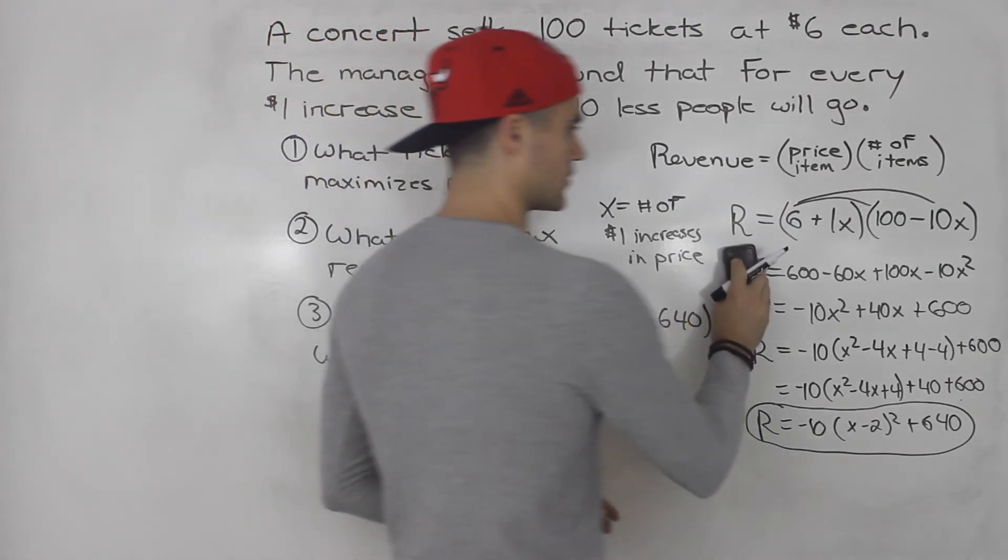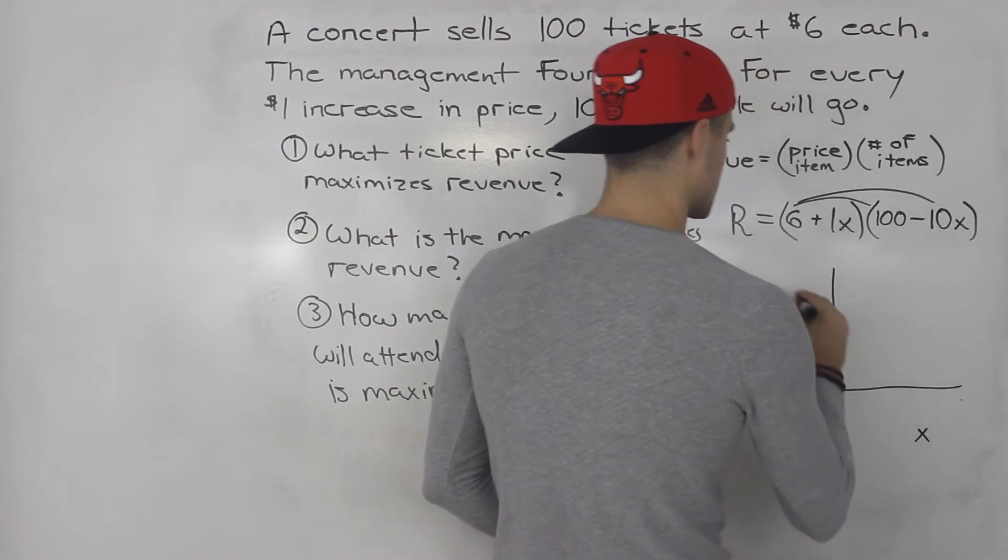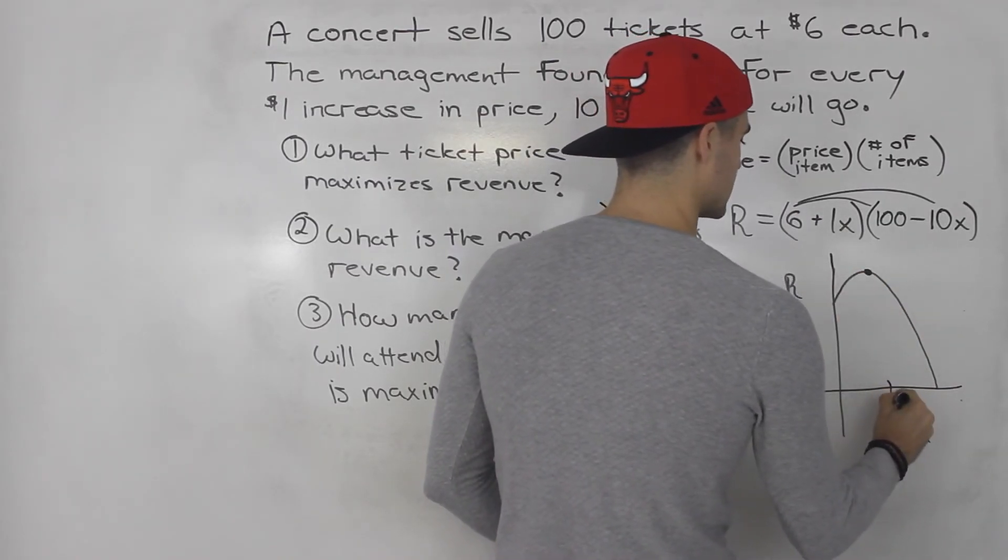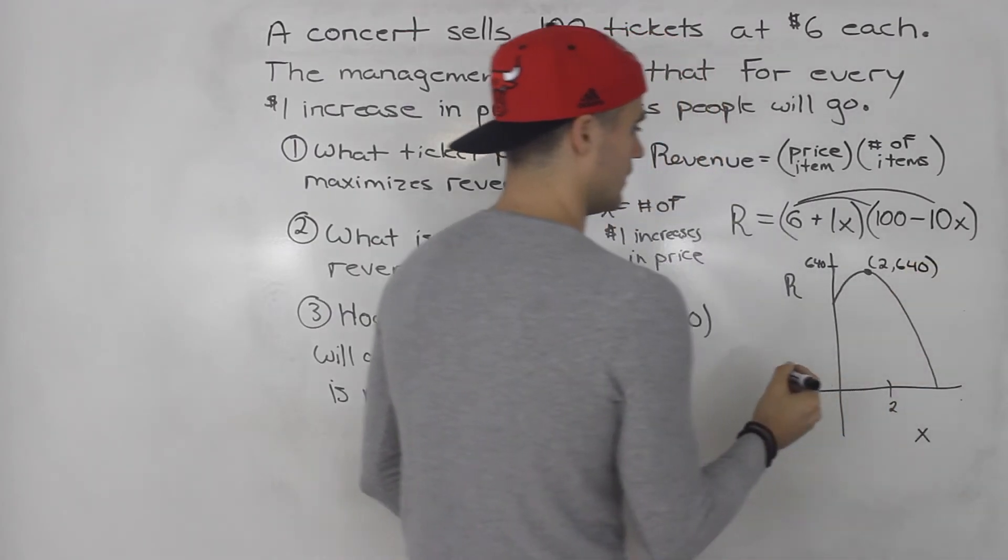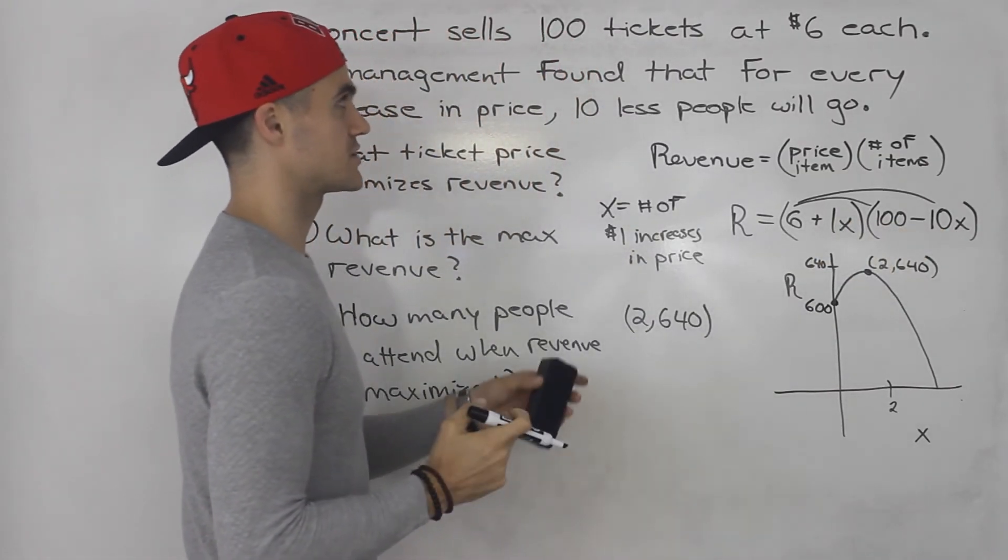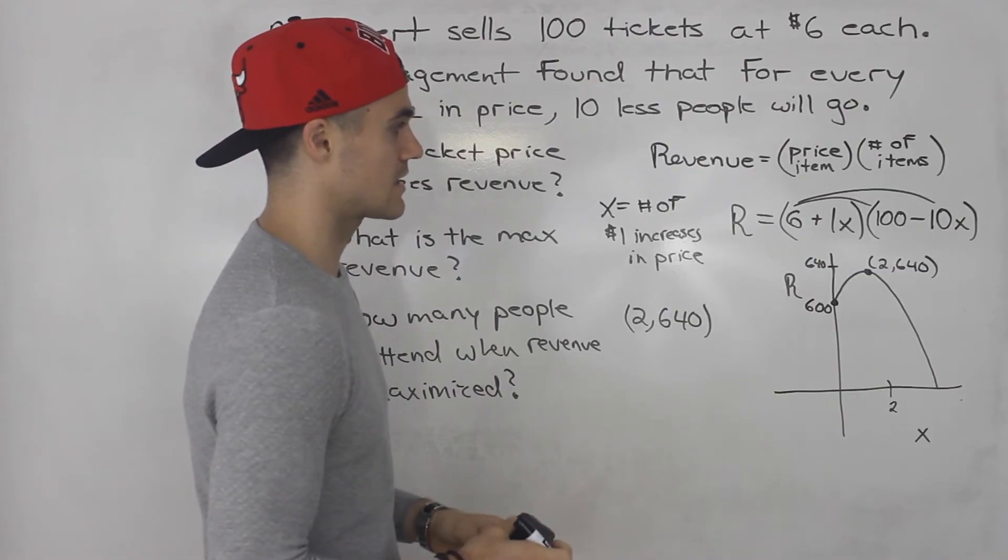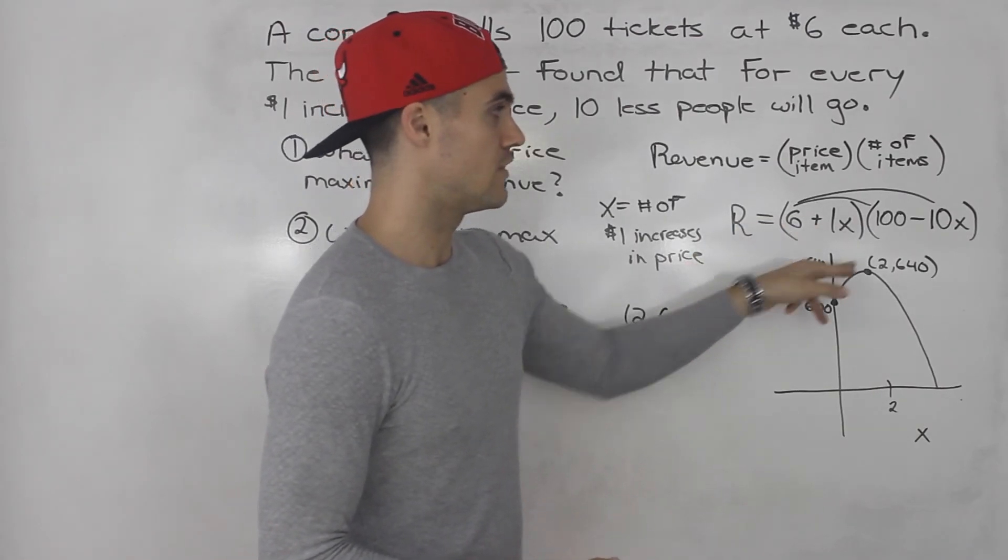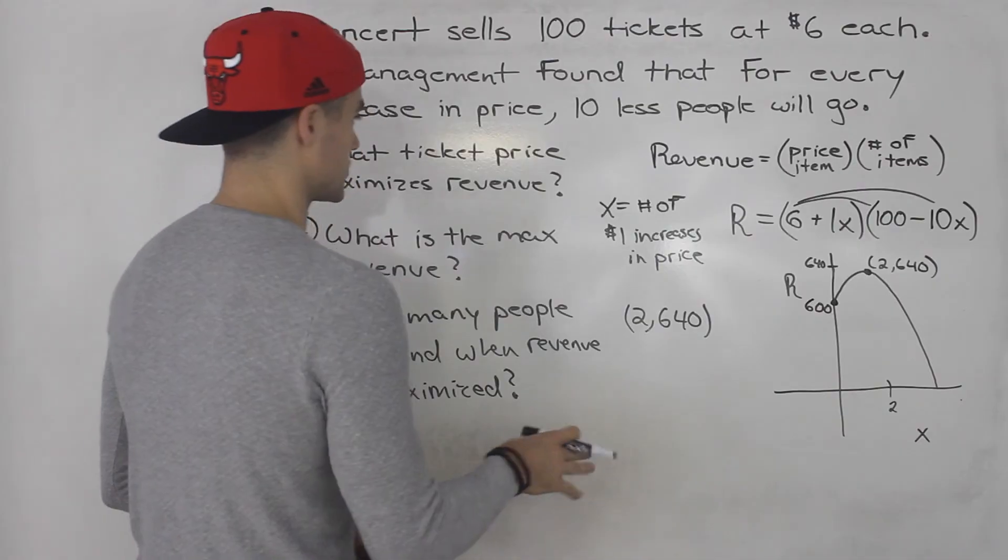Just to redraw the graph, we got x which is the number of price increases, and the revenue. Maximum revenue is happening at 2 and 640. What's the revenue here at x equals 0? 600, right? That's just the initial revenue that the concert had, $6 times 100 tickets. So this y-intercept is 600. But notice we can get a better revenue of 640 if we increase the price two times. Even though 20 less people will attend, overall the revenue will be higher.